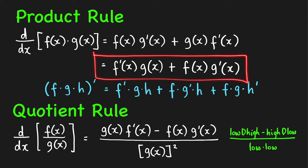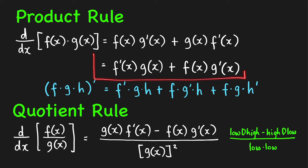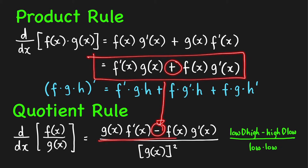When you take the derivative of a quotient, just replace the sum with a difference, and then divide the difference by the square of the denominator. That's why I prefer the product rule in that order — we can easily remember the quotient rule by just replacing the sum by a difference and dividing by the square of the denominator.